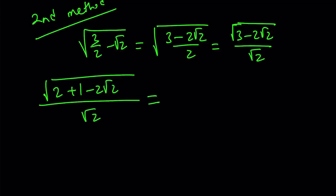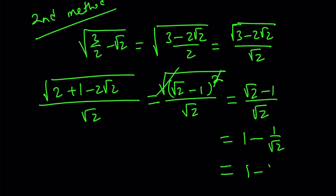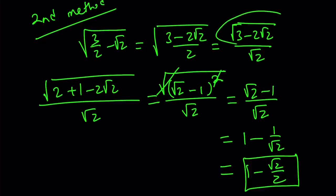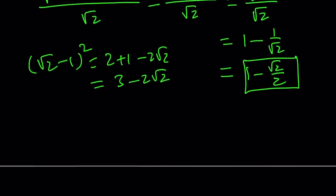Notice that we have a² plus b² minus 2ab, so the numerator inside the radical can be written as (√2 minus 1)². Since √2 minus 1 is positive, the square and square root cancel out, and we get (√2 minus 1) over √2. This can be written as 1 minus 1/√2, or equivalently 1 minus √2/2 as before. We made a common denominator, separated numerator and denominator, and recognized (√2 minus 1)² = 3 minus 2√2. We got the same answer, which shouldn't be surprising.